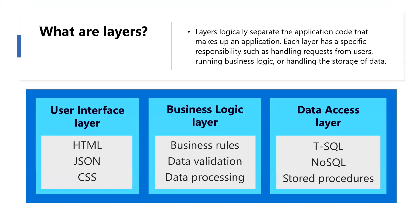What are layers? Layers logically separate the application code that makes up an application. Each layer has a specific responsibility, such as handling requests from users, running business logic, or handling the storage of data. By separating an application into these logical layers, we treat each layer independently. This makes the components of the application modular and allows us to more easily maintain the application.